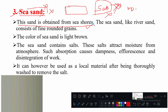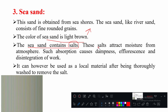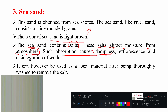Sea sand is obtained from seashores. Like river sand, it consists of fine-grained, round particles. The color of sea sand is brownish. The salts it contains attract moisture from the atmosphere; such absorption causes dampness, meaning continuous moisture is present on the surface.